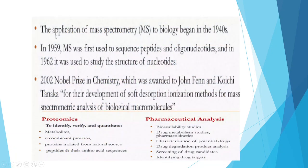The application of mass spectrometry to biology began in the 1940s. In 1959, MS was first used to sequence peptides and oligonucleotides, and in 1962 it was used to study the structure of nucleotides. In 2002, the Nobel Prize in Chemistry was awarded to John Fenn and Koichi Tanaka for their development of soft desorption ionization methods for mass spectrometric analysis of biological molecules.